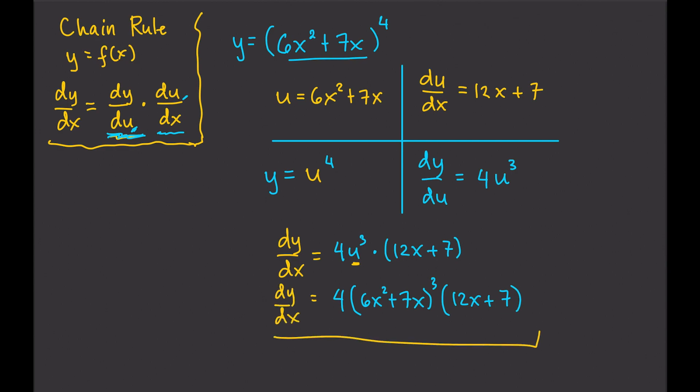Let's do another example: y equals the cube root of (1 minus 8x). First, rewrite this in exponential form as (1 minus 8x) to the power of one-third. Our u substitution is the inside function: u equals 1 minus 8x. The new function in terms of u is y equals u to the power of one-third.